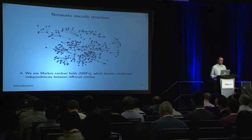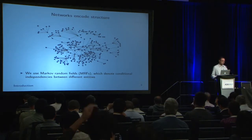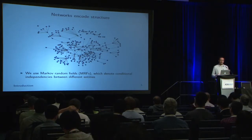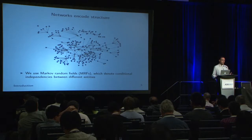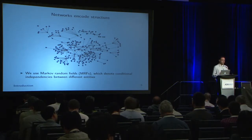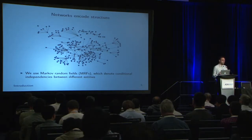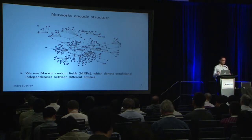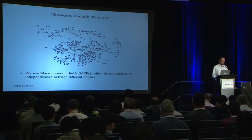One way to encode structure is the idea of networks. The type of network we're leveraging is known as a Markov random field, which shows correlations — specifically conditional dependencies and conditional independencies — between different sensors. If there's a lack of an edge between any two nodes, it means those two sensor values are conditionally independent given the remaining readings. This is a really useful interpretable structure.